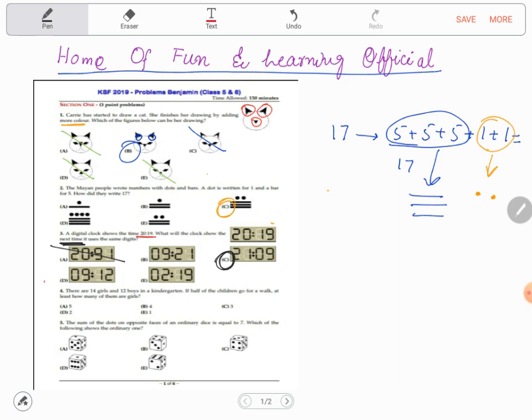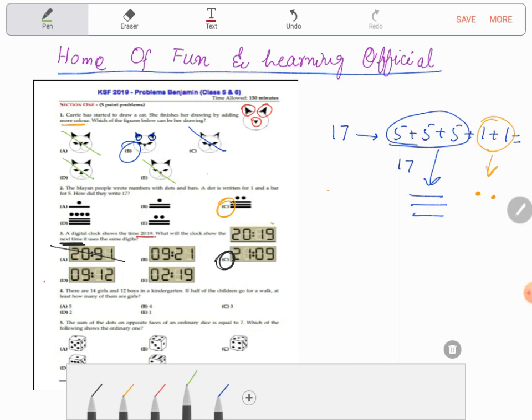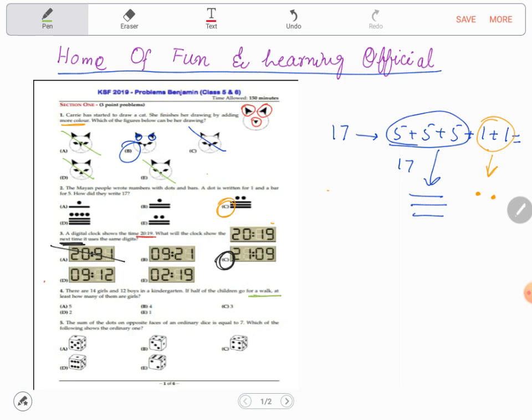Now let's move on to the next problem. There are 14 girls and 12 boys in a kindergarten. If half of the children go for a walk, at least how many of them are girls? There's an important phrase: at least. First we need to find how many boys and girls went for a walk.